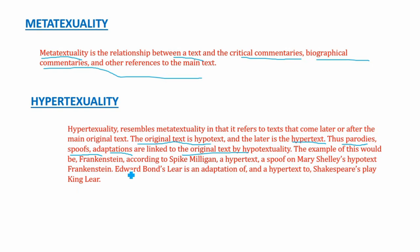A good example of hypertextuality is Frankenstein: the original novel was written by Mary Shelley, but later parody or spoof versions were written by Spike Milligan. Another example is Edward Bond's play Lear — the original King Lear was written by Shakespeare, and Bond later rewrote it with minor alterations. The original work is the hypertext, and the later copy or adaptation represents hypertextuality.